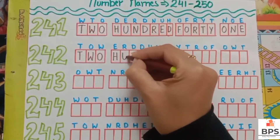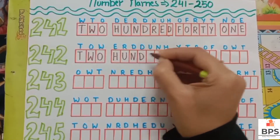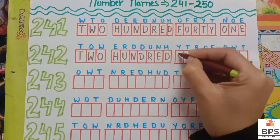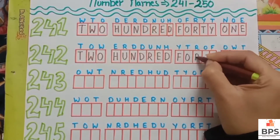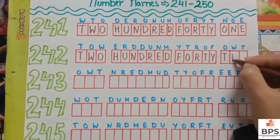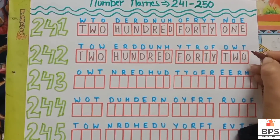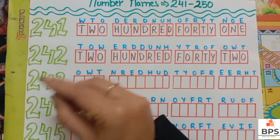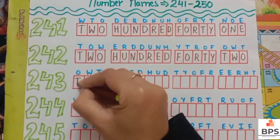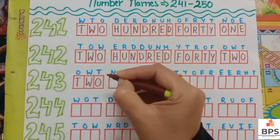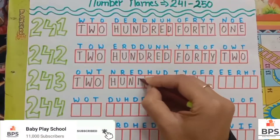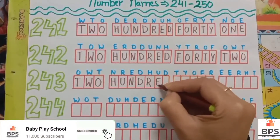Two four two — two hundred forty two. T-W-O, two; H-U-N-D-R-E-D, hundred; F-O-R-T-Y, forty; T-W-O, two. Two hundred forty two.